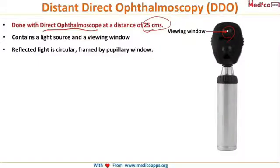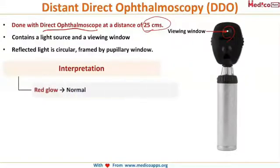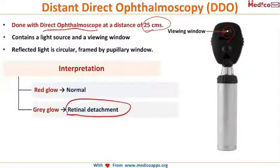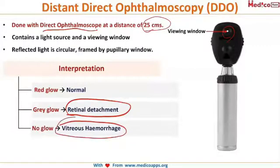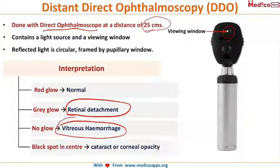The interpretation depends on the type of reflex returning from the patient's eye. A red glow is normal. A gray glow is indicative of retinal detachment. If there is no glow at all, it is a clear case of vitreous hemorrhage. If there are black spots against the red glow, this may indicate a cataract or a corneal opacity.